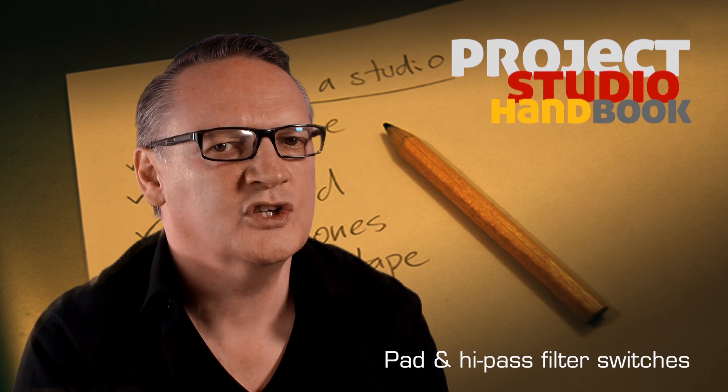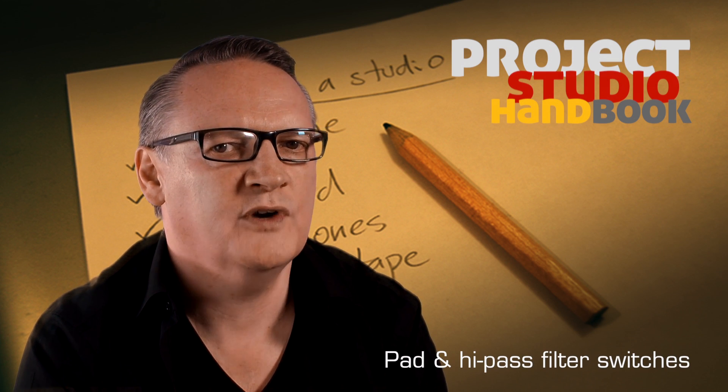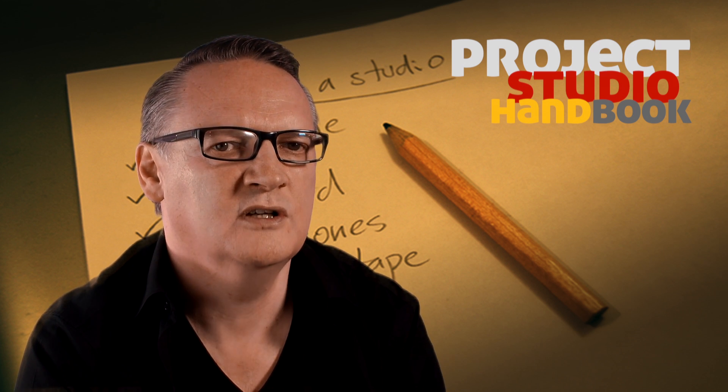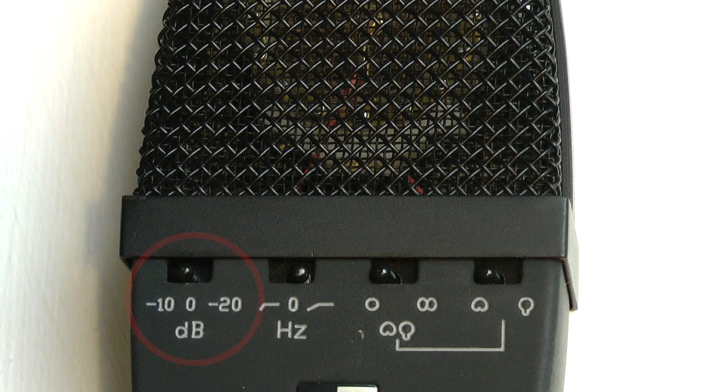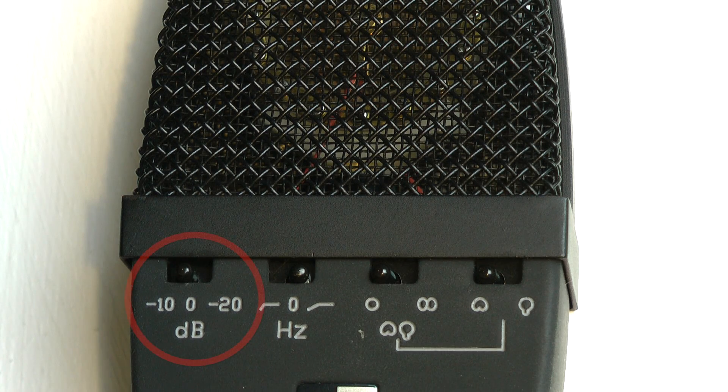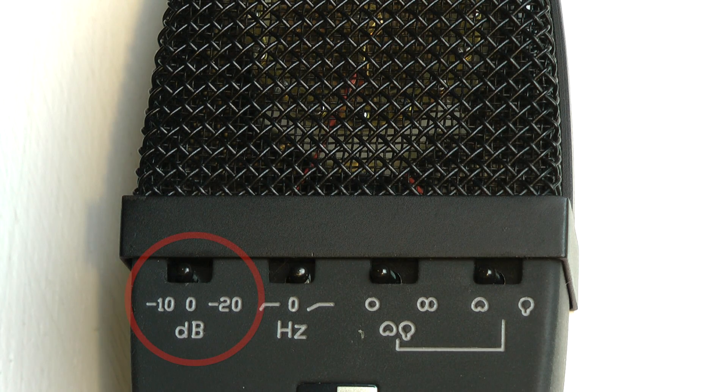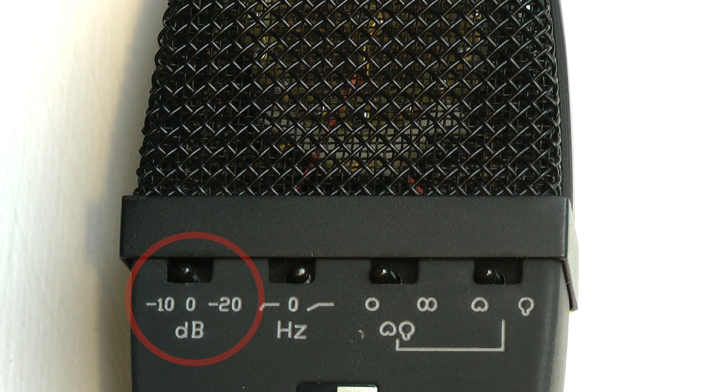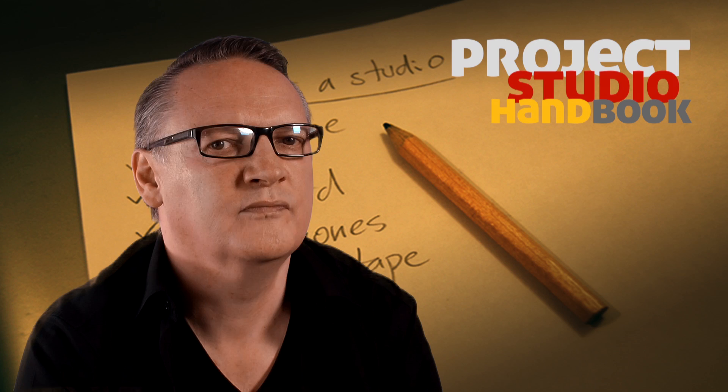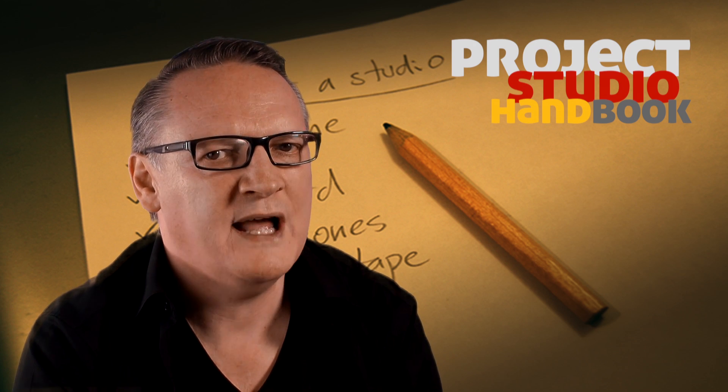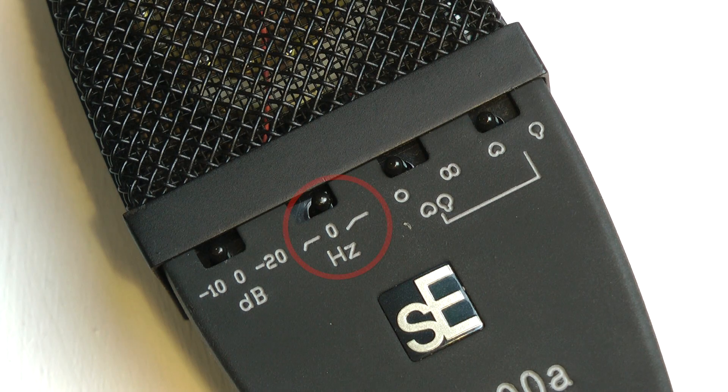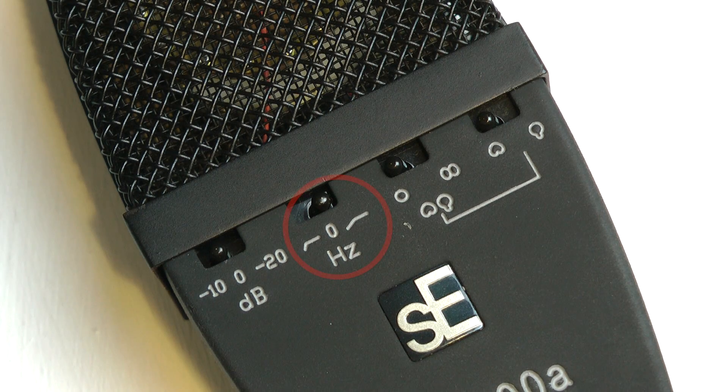In addition to polar pattern select switches, some microphones have circuitry to reduce a microphone's overall sensitivity. A so-called pad switch will allow a microphone to capture a wide range of sound pressure levels without distorting. Pad switches typically allow 10 dB of attenuation. A microphone may also have a high-pass filter switch to reduce rumble and roll off low frequencies, typically below 50 Hz.